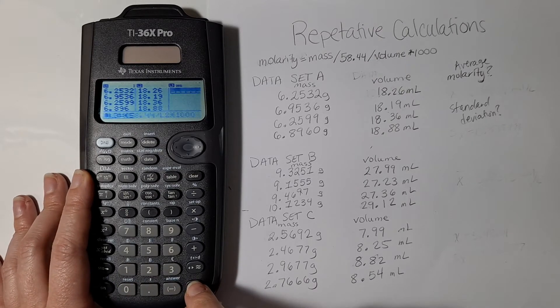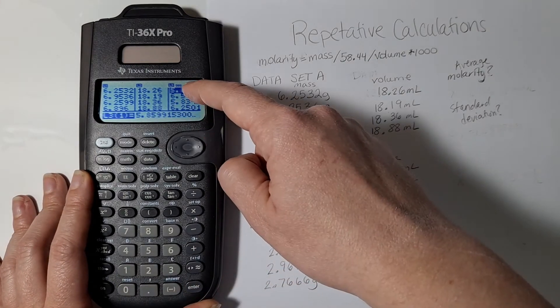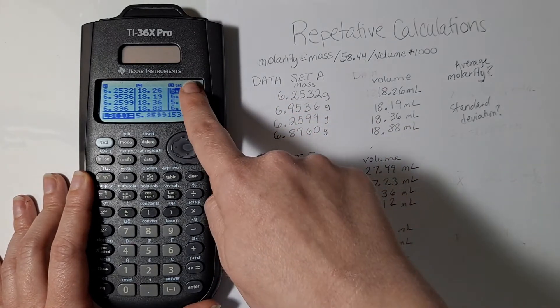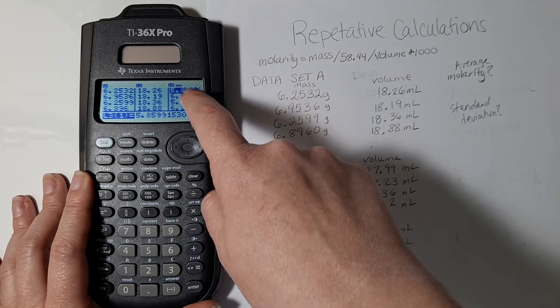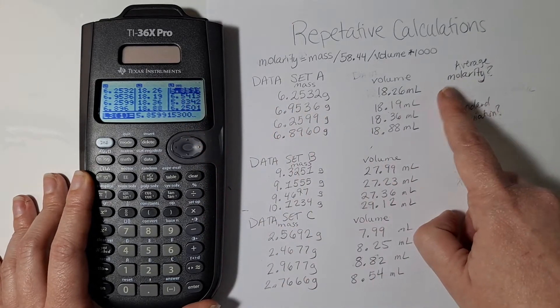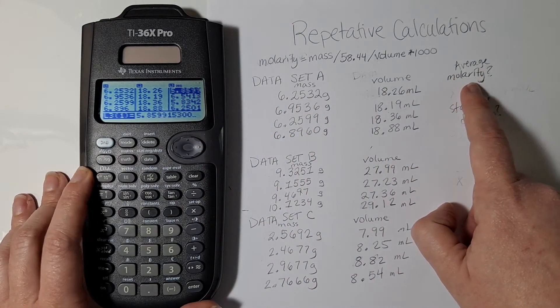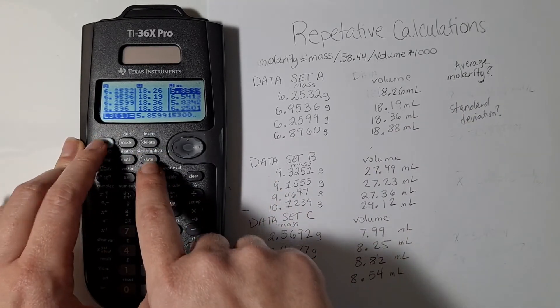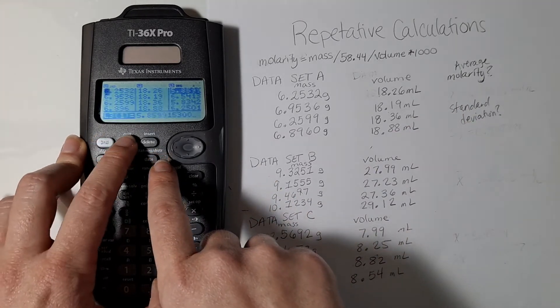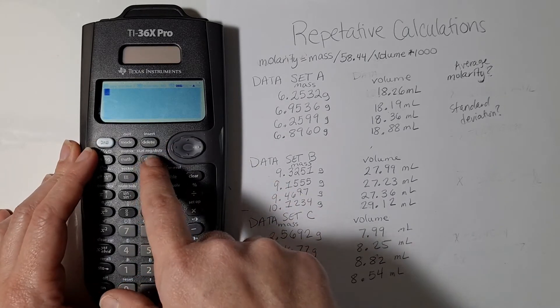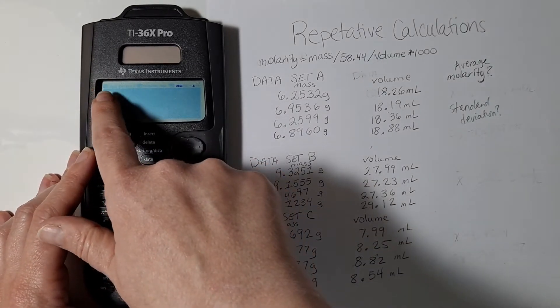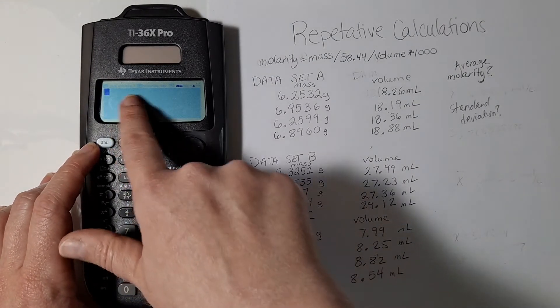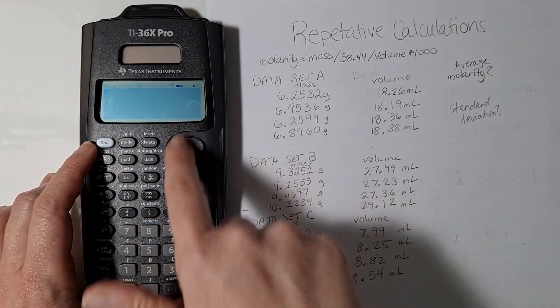Now when I hit enter my calculator calculates my molarity for each trial. If I needed each of those numbers I could write them down, but in this particular case I just need the average. So I'm going to quit this menu. You don't have to quit first, but I want my average to be stored as a variable after I'm done, so I'm going to quit first so that I'm brought back out here to the main menu.